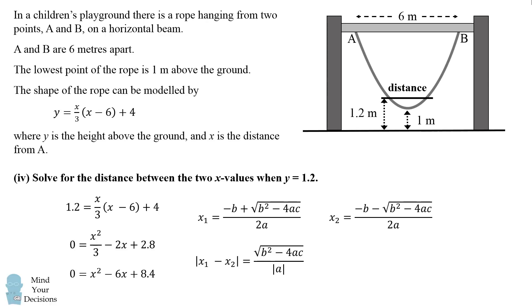So I'll take the absolute value of x1 minus x2 making sure that we get the positive distance. This simplifies to be the square root of b squared minus 4ac all over the absolute value of a.